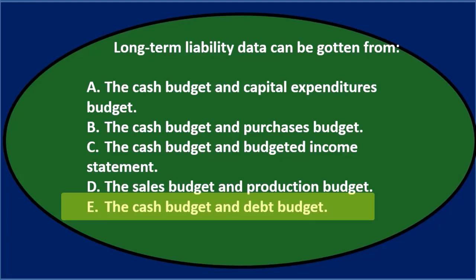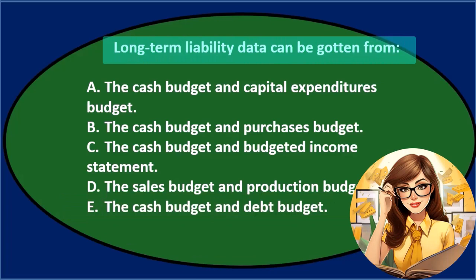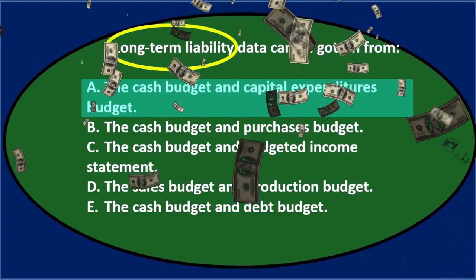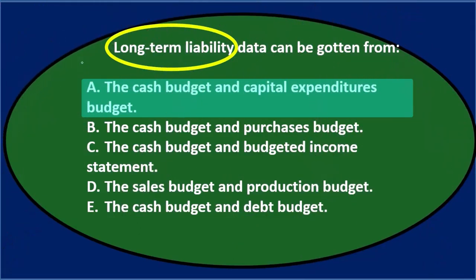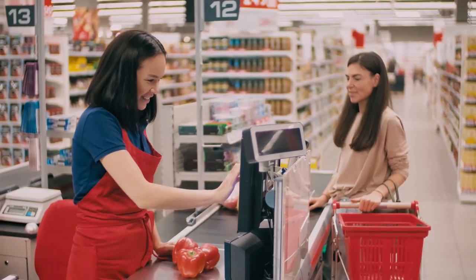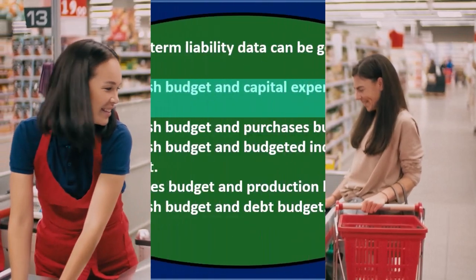Let's go through this using the process of elimination. Option A says the cash budget and capital expenditures budget. Cash might be involved since long-term liability could go up or down due to cash received, and capital expenditures involve purchasing big items like property, plant, and equipment, which could result in a liability. So that sounds possible — we'll keep A for now.